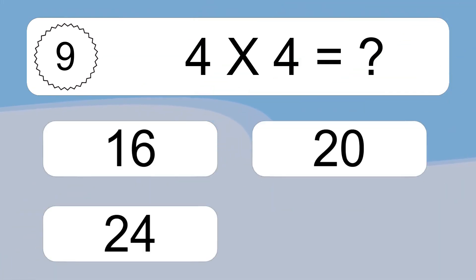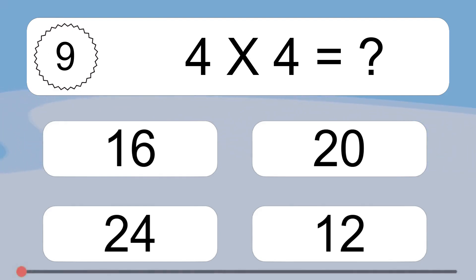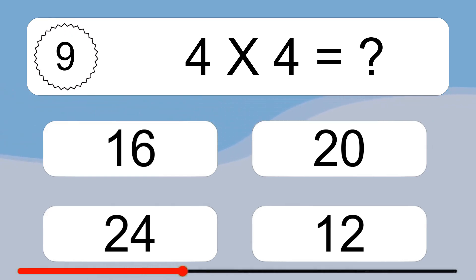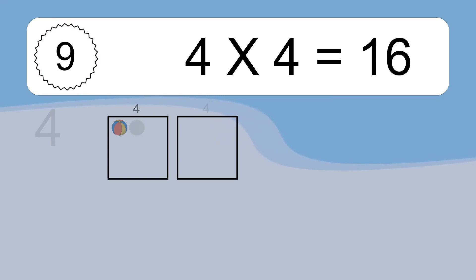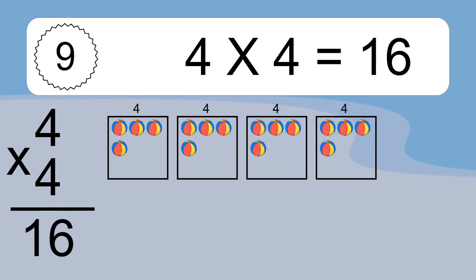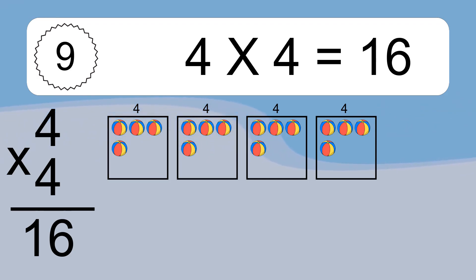4 x 4 equals what? 4 x 4 equals 16. We have 4 boxes, and each box has 4 colorful balls inside. If you count all the balls in all the boxes together, you will have 4 x 4 balls. This equals 16 balls.